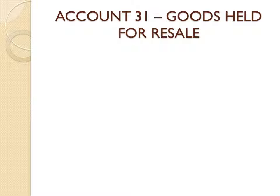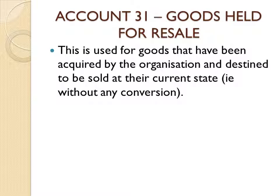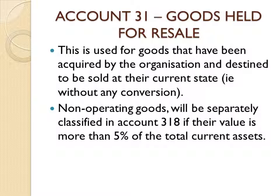This video presentation deals with goods held for resale at their current state — goods that were purchased to be sold without any conversion. This ties mostly with merchandising or retailing businesses. Non-operating goods will be classified separately in account 3.1.8 if their value is more than 5% of the total current assets. If their value does not exceed 5% of total current assets, they will not be separately classified but grouped together with all other goods.